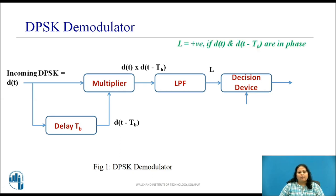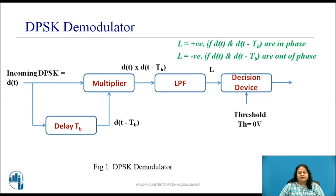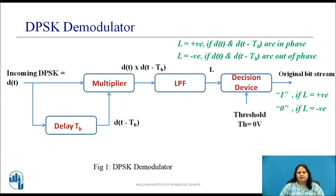The DC value L is positive when the incoming signal in the current bit slot is in phase with the previous received signal, and the DC value is negative when the incoming signal in the current bit slot is out of phase with the previous received signal. This voltage is then applied to the decision device whose threshold value is set to 0 volts. At the output of the decision device the original bit stream is obtained. The output bit is 1 if L is positive and 0 if L is negative.